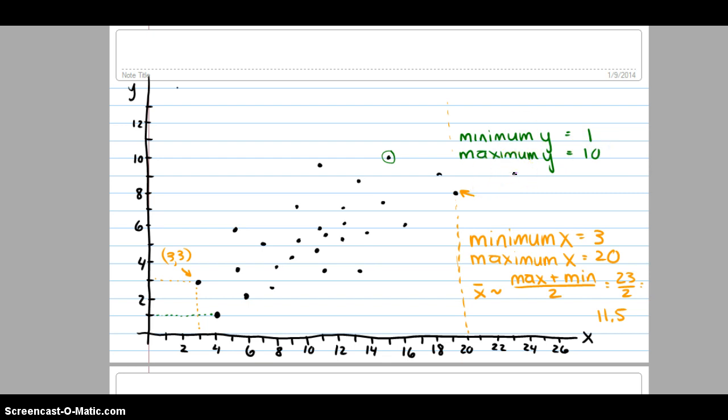So if we were going to estimate y-bar, the mean of y, we might find the midrange. We would take the maximum y plus the minimum y and divide by 2, 5.5. Now we have an estimate for our mean of x and an estimate for our mean of y.